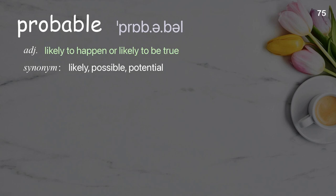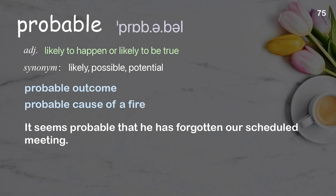Probable: Likely to happen or likely to be true. Examples: probable outcome, probable cause of a fire. It seems probable that he has forgotten our scheduled meeting.